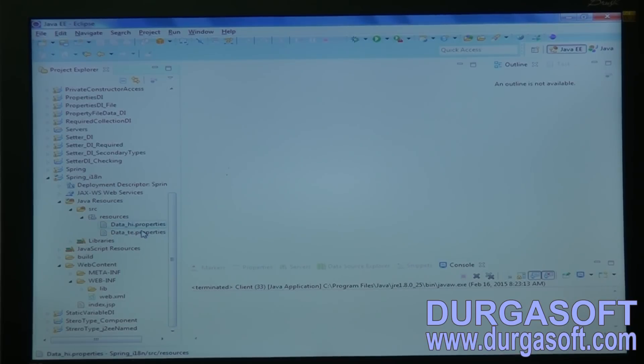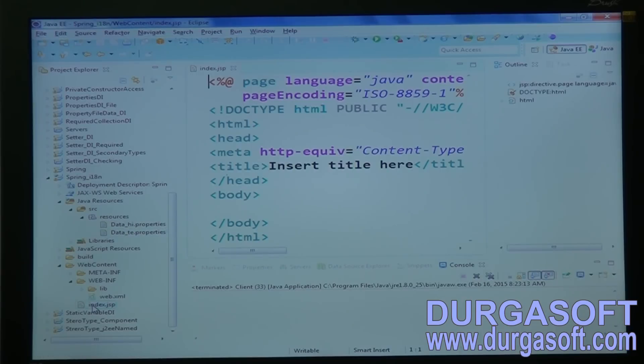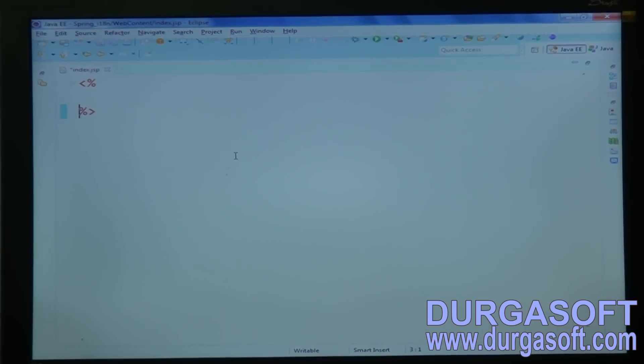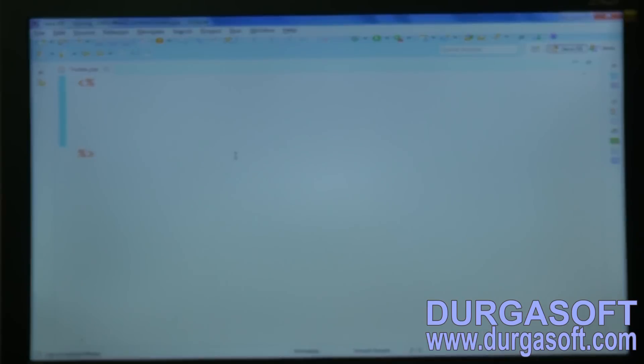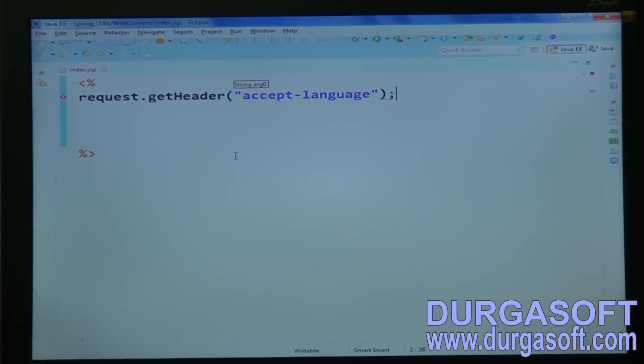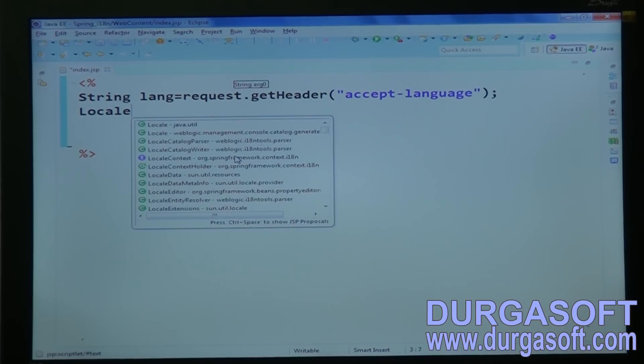Now, dynamically you need to choose this properties file and that properties file data you need to populate in this index page. So here, how dynamically I can get language first? First thing I need to know the browser language. To know the browser language, here you have to use request dot get headers. Through headers, you need to read your browser language. Accept hyphen language. So it will provide us browser language. By using this browser language, we have to create a locale object.